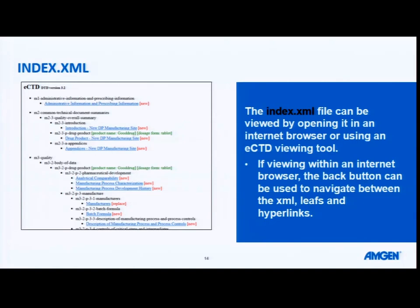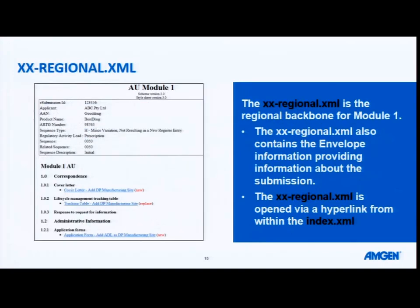When you open it up in Internet Explorer or a similar browser, you use your back button to return between navigating documents and hyperlinks. At the very top of the index XML, there is a hyperlink to take you to the regional XML. This is where your module 1 table of contents is. It also contains the envelope — information about the submission, a very high-level description of what's in that sequence.